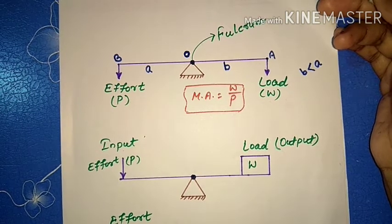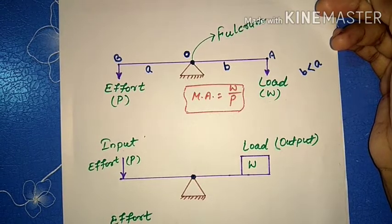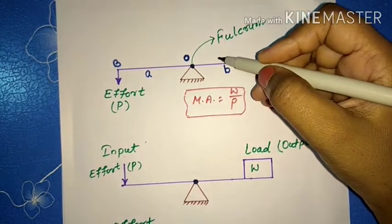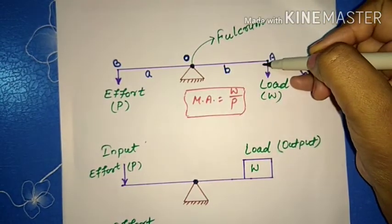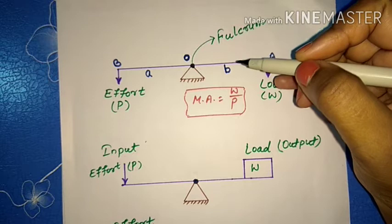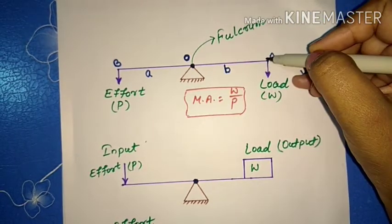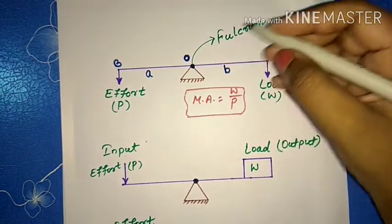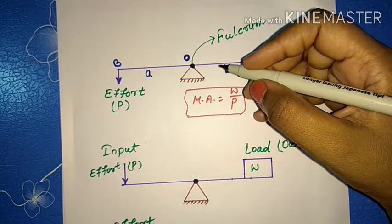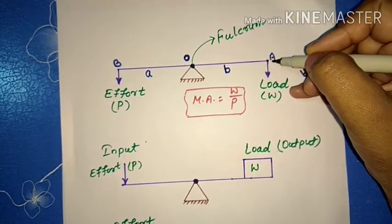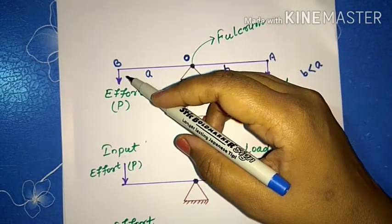Relationship between efficiency, velocity ratio, and mechanical advantage. In the last class, we saw that in the case of levers, which can turn about a point called the fulcrum, it enables a small effort to overcome a large load. The distance of the load from the fulcrum must be less than the distance of the effort from the fulcrum — to lift a load with least effort, place the load as close to the fulcrum as possible, and apply the effort as far from the fulcrum as possible.